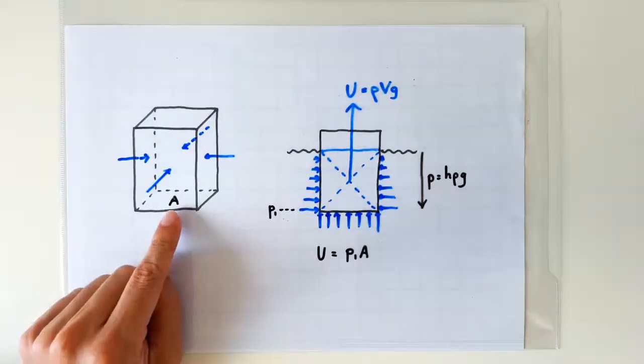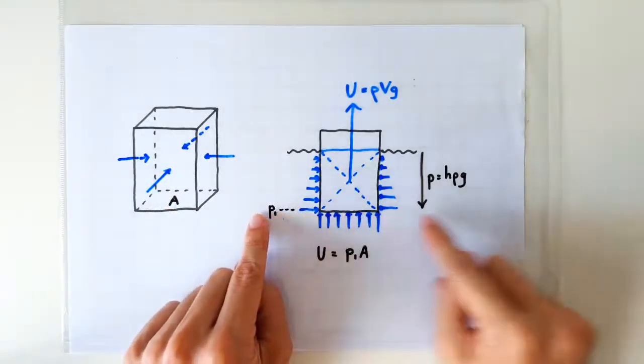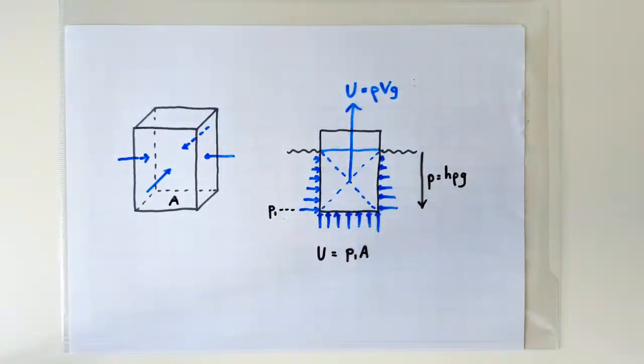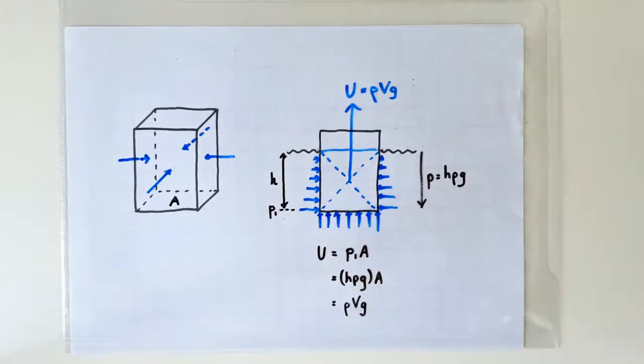If we let the cross-sectional area of the cuboid be A, and the fluid pressure at this level, at the bottom of the cuboid, be p₁, then the uptrust can be written simply as p₁ times A. p₁ can be written as hρg.